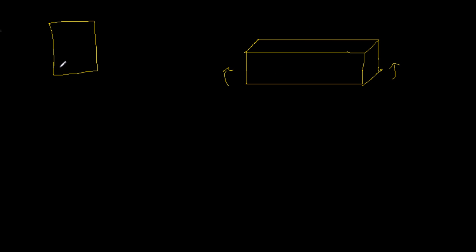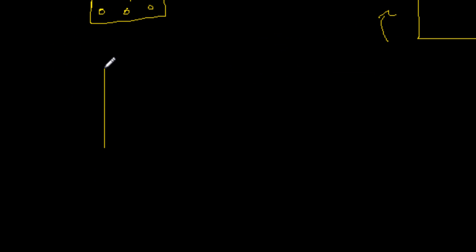We're going to assume positive moment, which means compression at the top and tension at the bottom. Because there's tension at the bottom, we have rebar at the bottom, because concrete can't withstand tension force. When a beam is under stress, the top part is in compression and the bottom is in tension. The stress diagram always looks like this, with a neutral axis dividing the two zones.